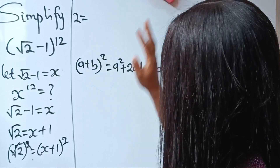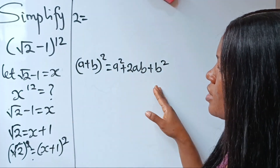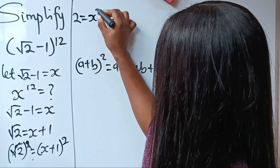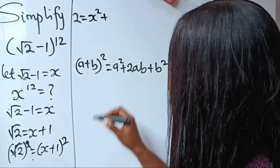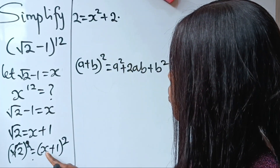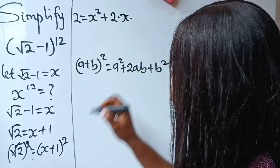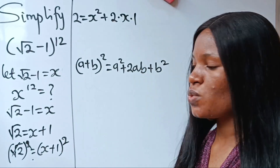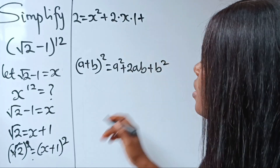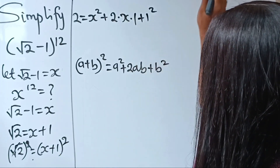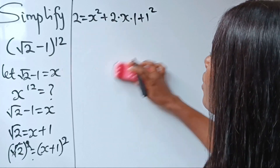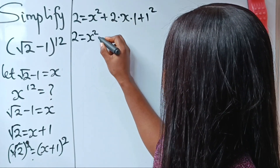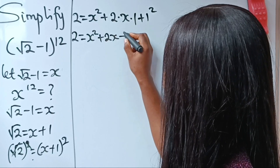We are going to express this using the identity. So we have a squared — that is x squared — plus 2ab, which is 2 multiplied by x multiplied by 1, since our a is x and our b is 1, plus b squared, that is 1 squared. So we have 2 is equal to x squared plus 2x plus 1.